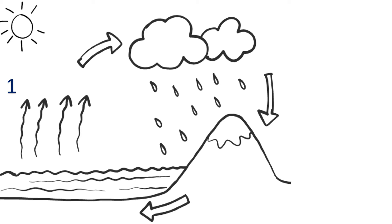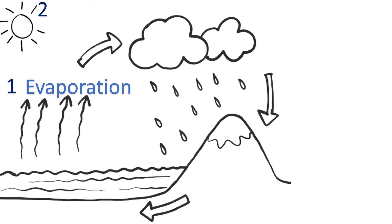What's the first process shown here? This is when water goes from liquid to gas — this is evaporation, very good. After that, when the vapor gas rises into the atmosphere and forms clouds again, turning back into liquid, this process is called...